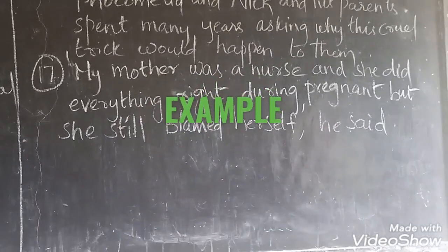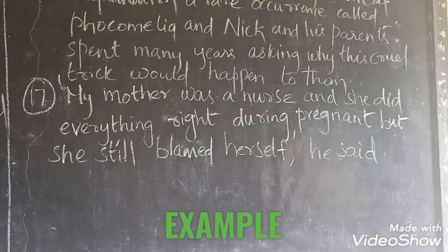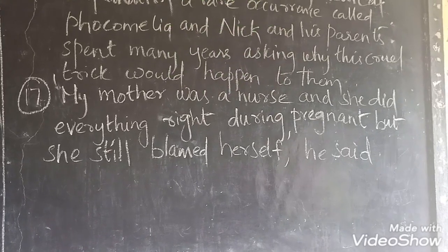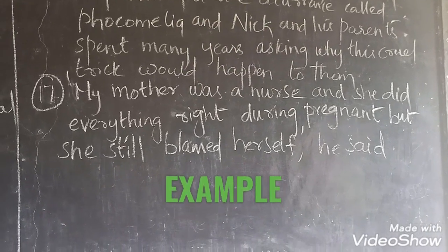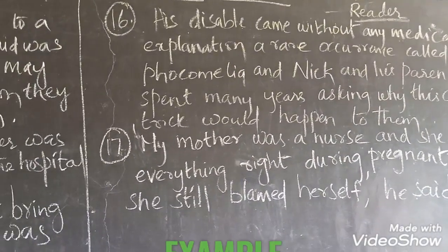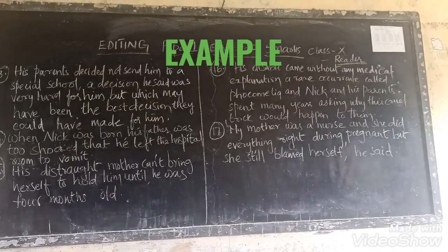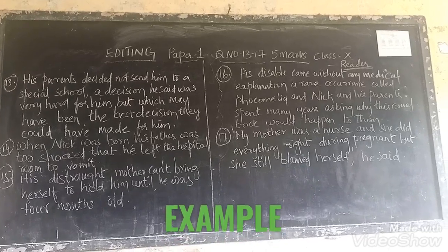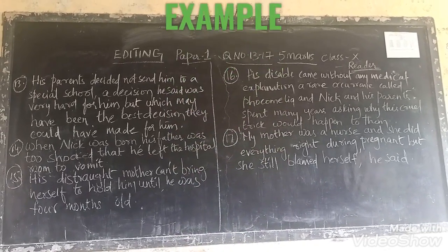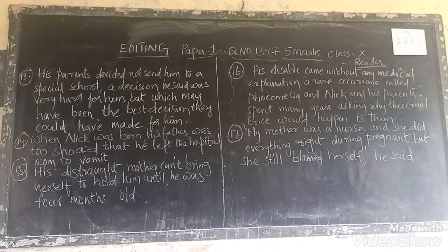Look at sentence 17: 'My mother was a nurse and she did everything right during pregnant, but she still blamed herself,' he said. In this sentence also, the form of a word should be changed. Now try to do it — I will be coming back with the answers in a moment.